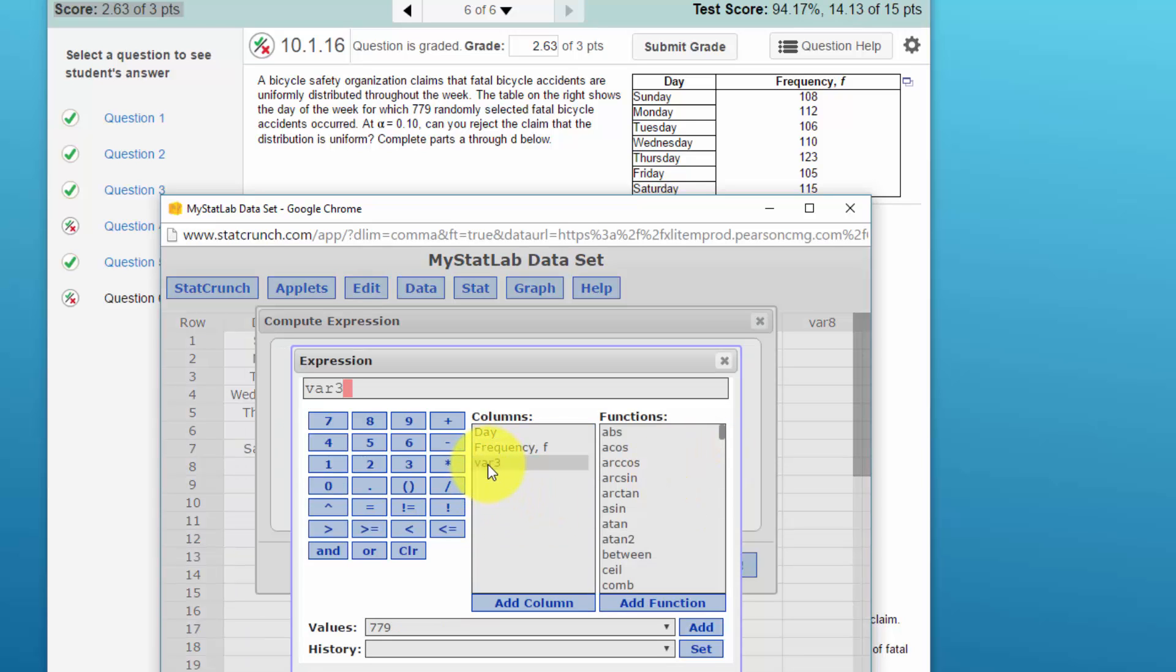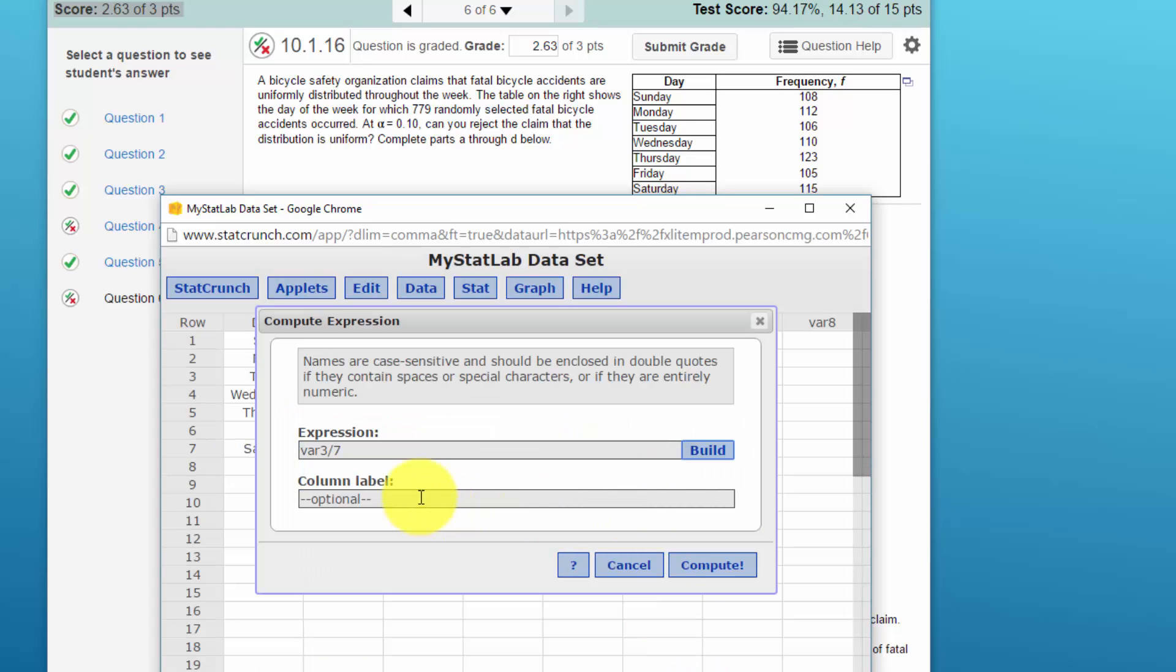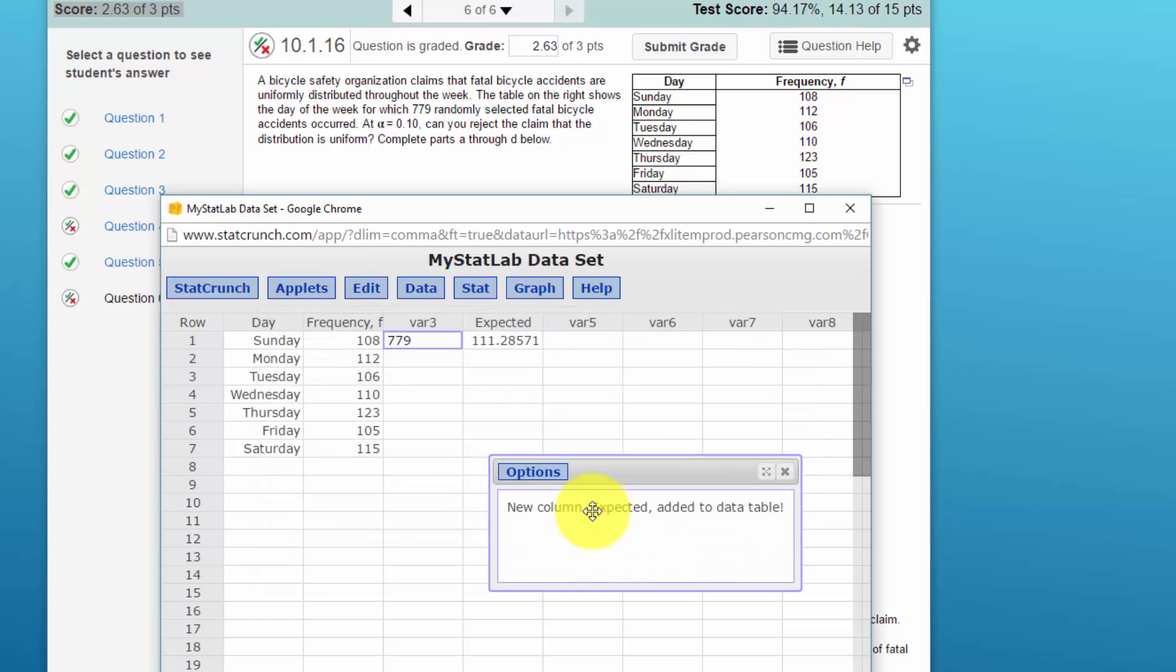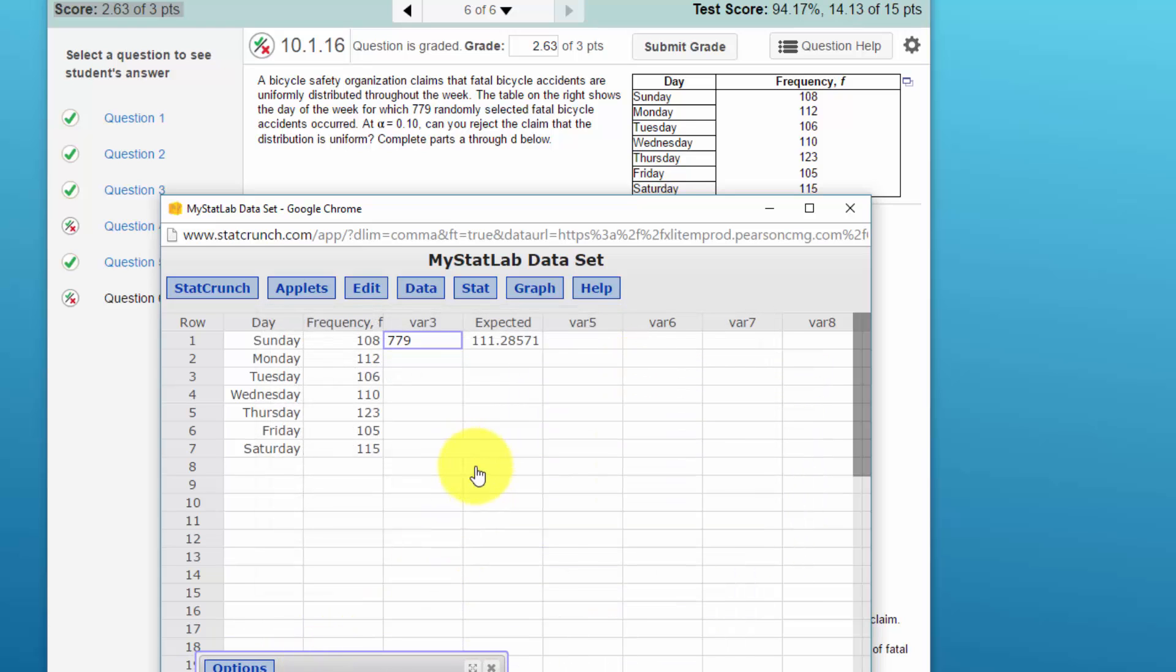I'm going to label it expected, compute, and now we've got our first value but we need that for each of the seven days. So I'm going to select that, control C to copy it, highlight those next six cells, control V to paste it. So now we've got our expected values that we need to run the test.